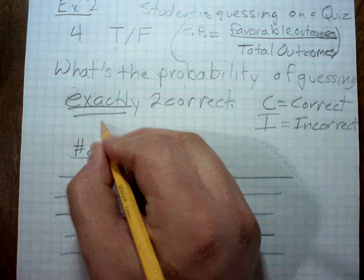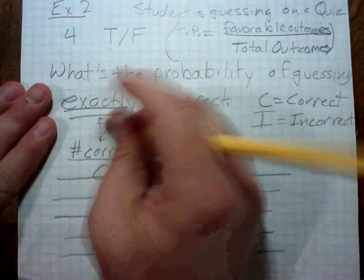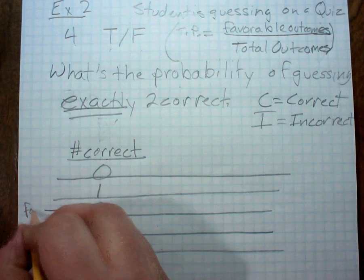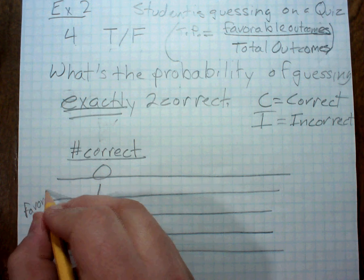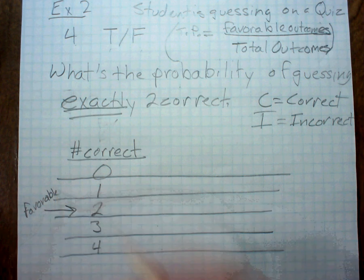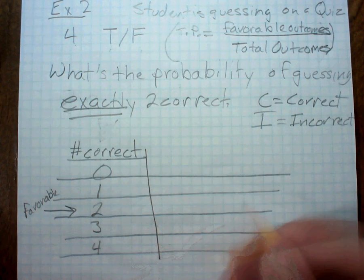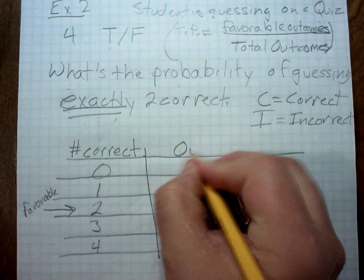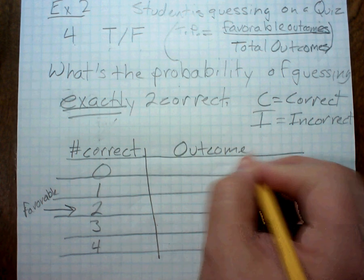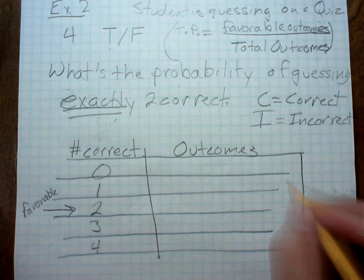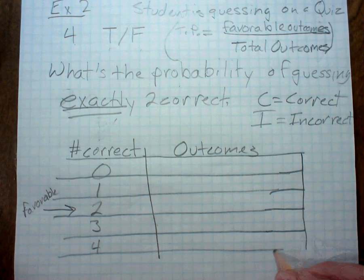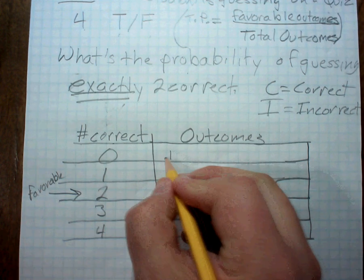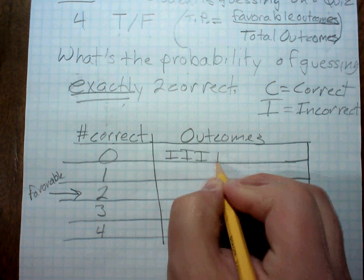What we consider to be favorable is exactly two correct. Now let's figure out the sample space for all of these. If I have zero correct, that means I got all four incorrect.